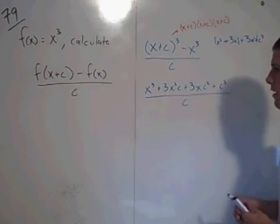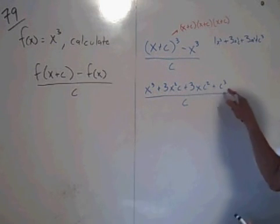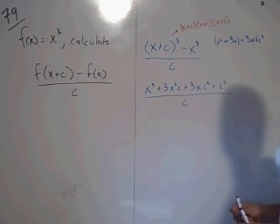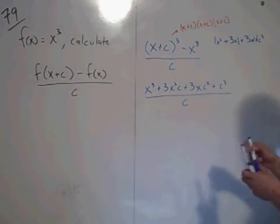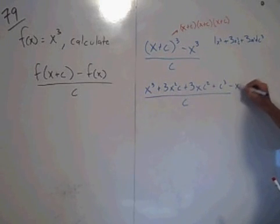Now, at this point, what you should find is that all the terms that don't have a c should cancel. Oh, I forgot this minus x cubed. So this is minus x cubed at the end there.